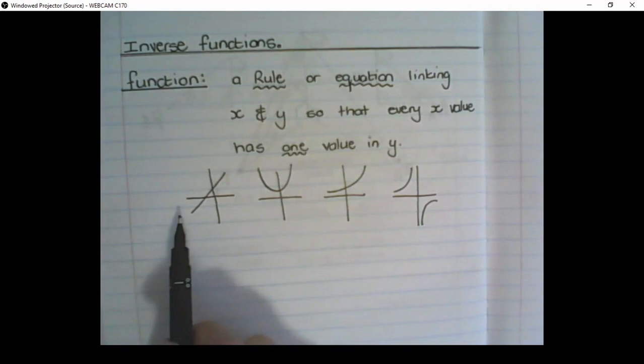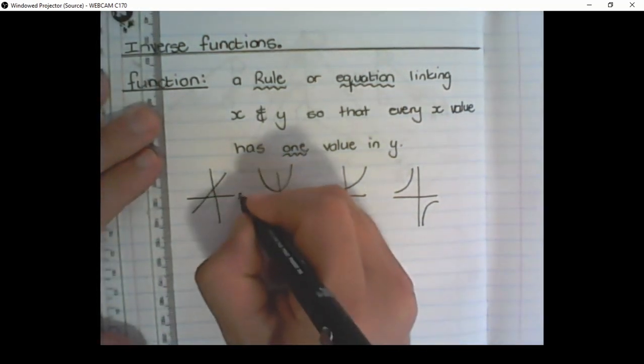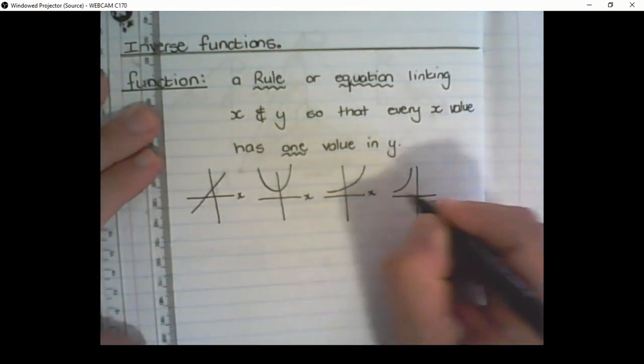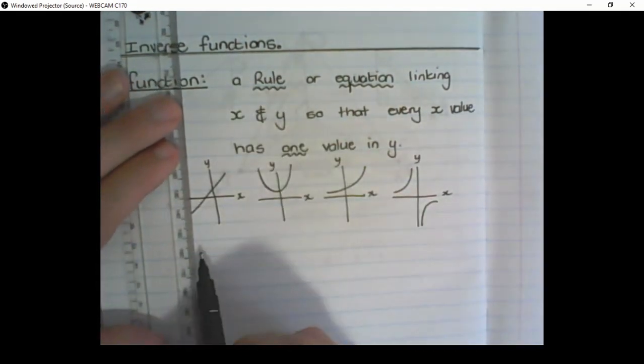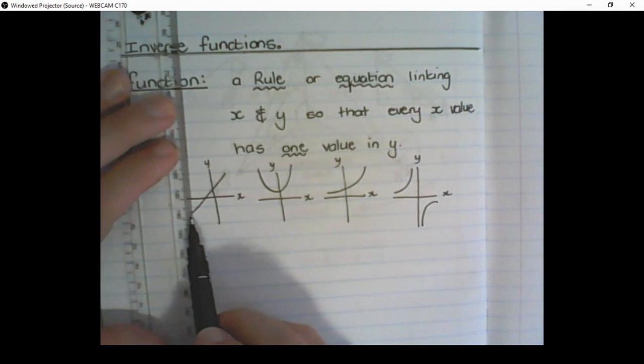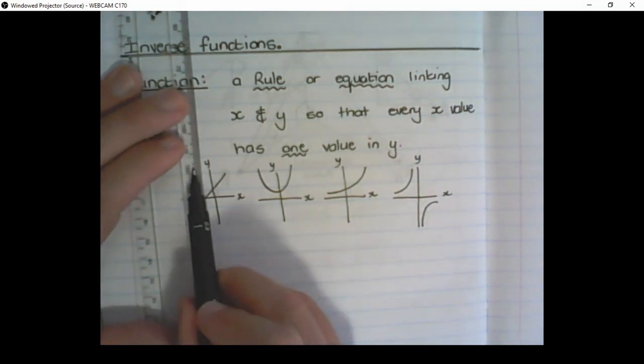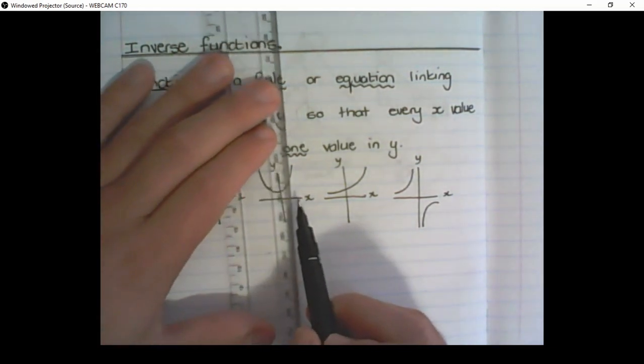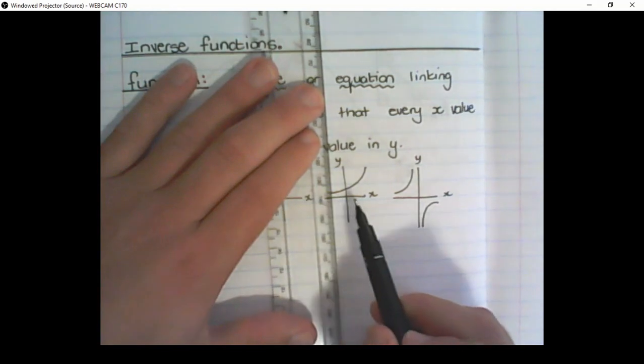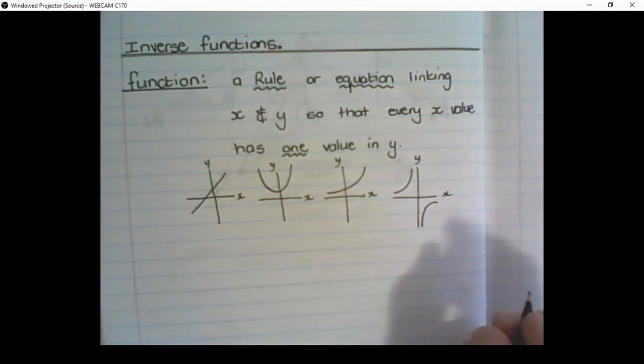So how we test graphically when it's a function is we do the vertical line test. If this is the x-axis, that's the y-axis. Then if I go vertically, I can see that the ruler only goes through the function once. So all of these, it's only touching the function at one place, never at two places at the same time.